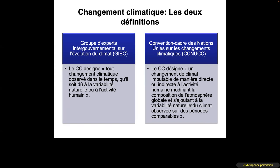What is climate change? There are two definitions. The IPCC defines climate change as all climate change observed over time, whether due to natural variability or human activity. The UNFCCC defines climate change as a change of climate attributable directly or indirectly to human activities, modifying the composition of the global atmosphere and adding to the natural variability of the climate observed in comparable periods.